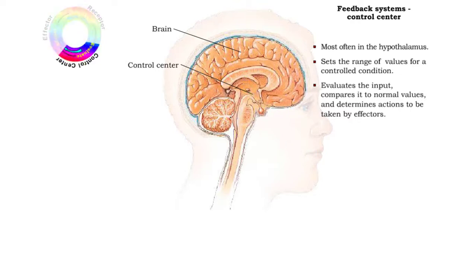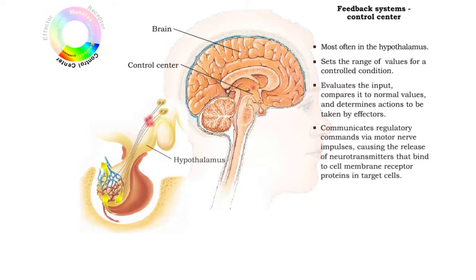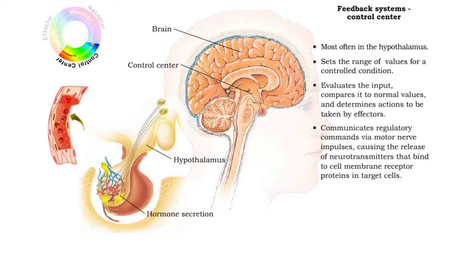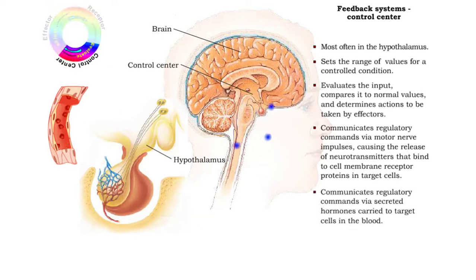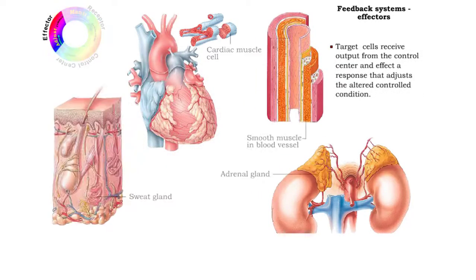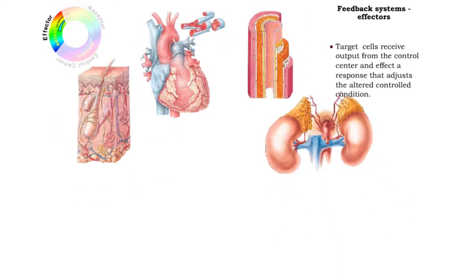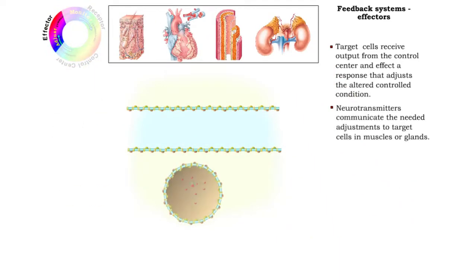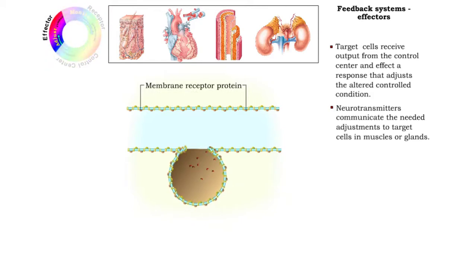A plan of action for response to the altered condition is formed in the control center as well. Regulatory commands to affect the change in status of the controlled condition are communicated either in the form of electrical nerve impulses or secreted hormones, or both. Effectors are the cells of any body structure that receive output from the control center, and they produce a response that adjusts the altered controlled condition.